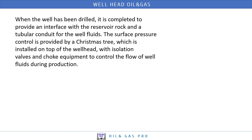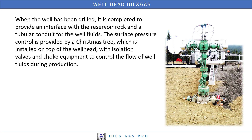When the well has been drilled, it is completed to provide an interface with the reservoir rock and a tubular conduit for the well fluids. The surface pressure control is provided by a Christmas Tree, which is installed on top of the wellhead with isolation valves and choke equipment to control the flow of well fluids during production.